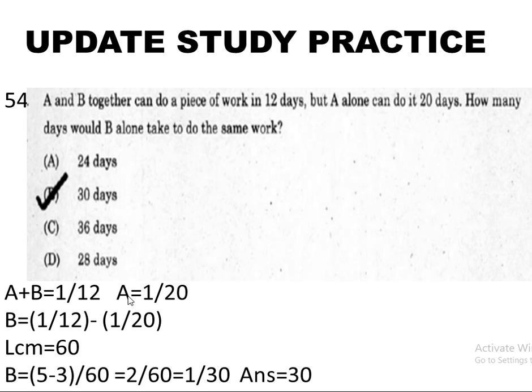This can also be solved by substitution: A and B together is 1 by 12, minus A which is 1 by 20. Using LCM and subtracting, simplifying, the answer is 30.